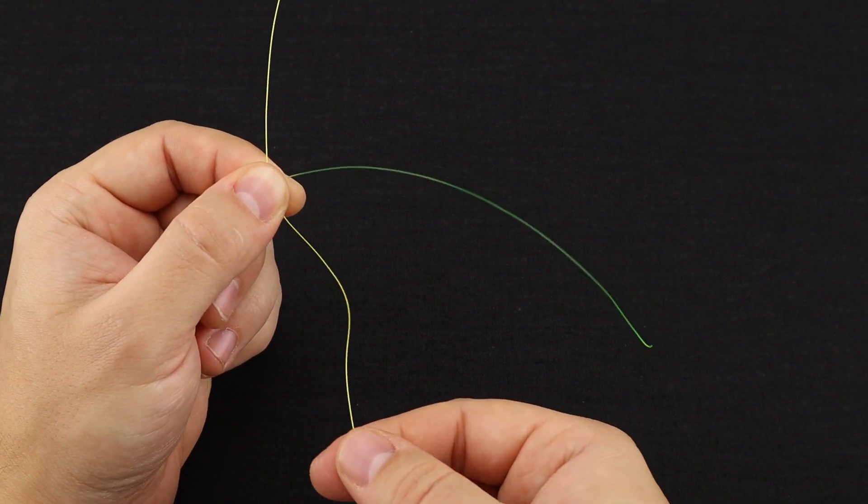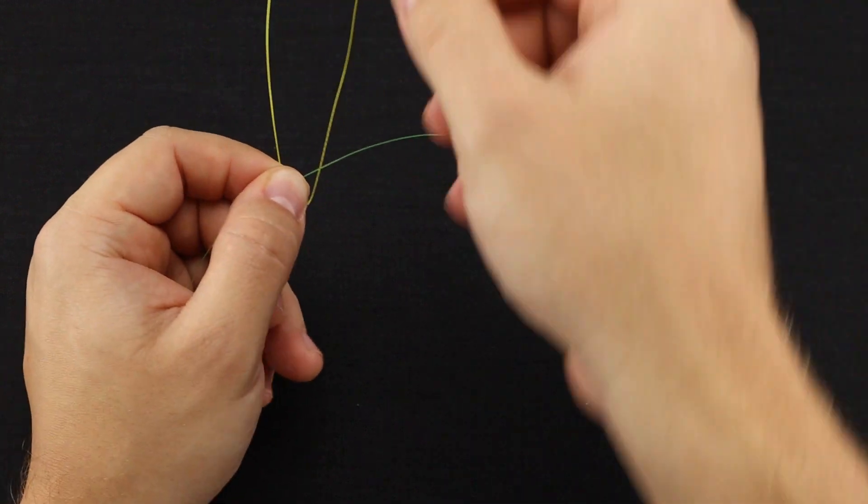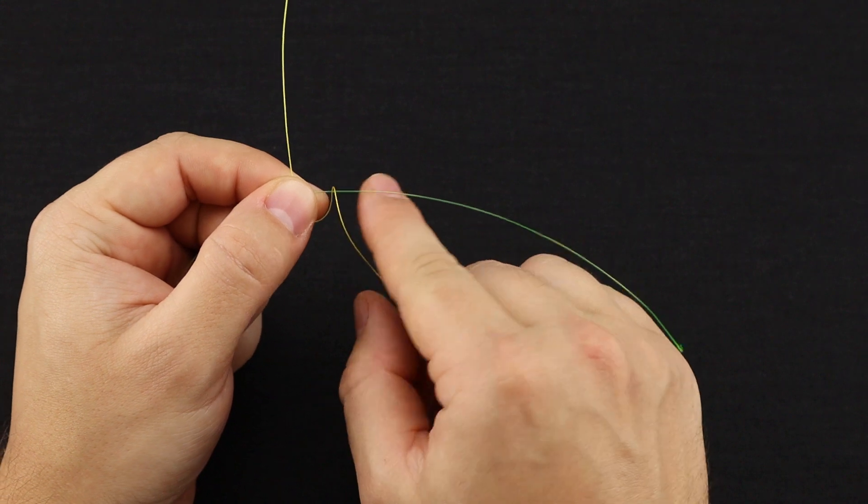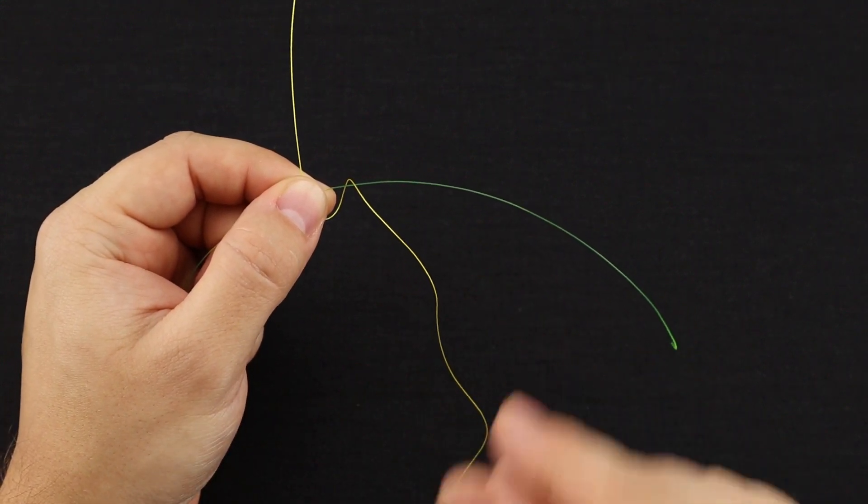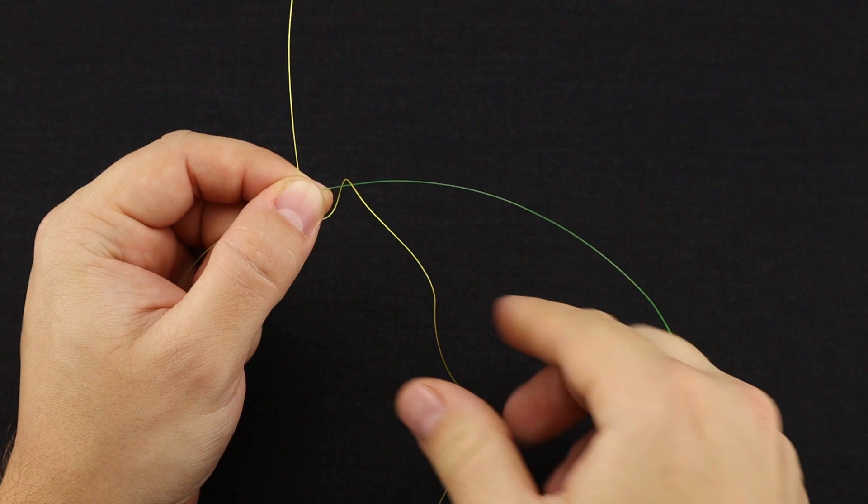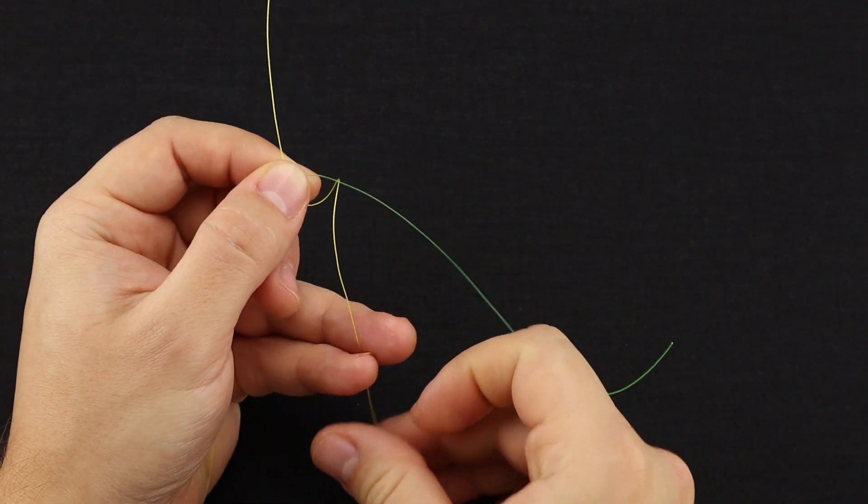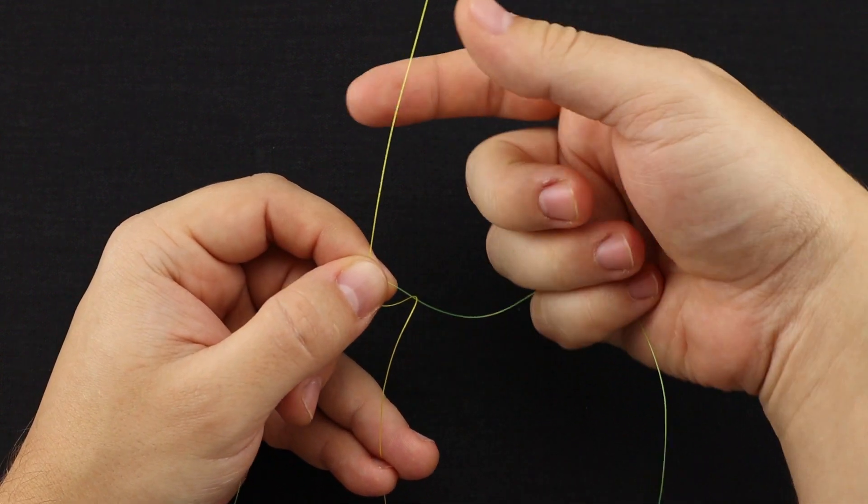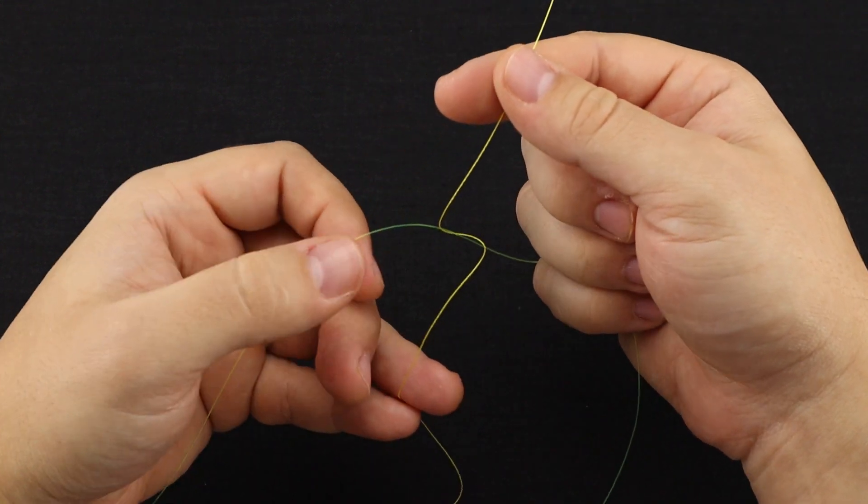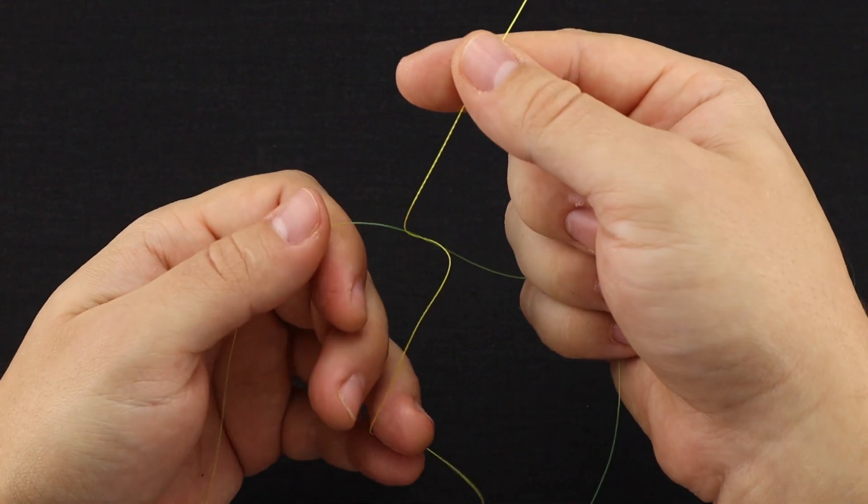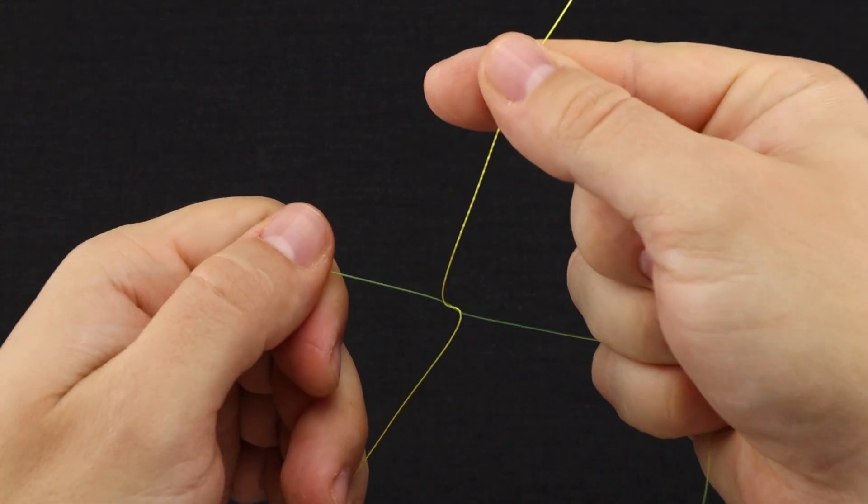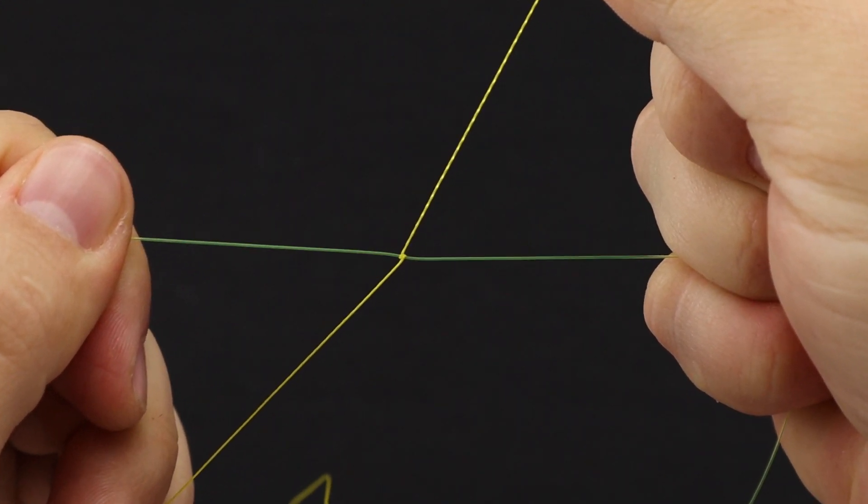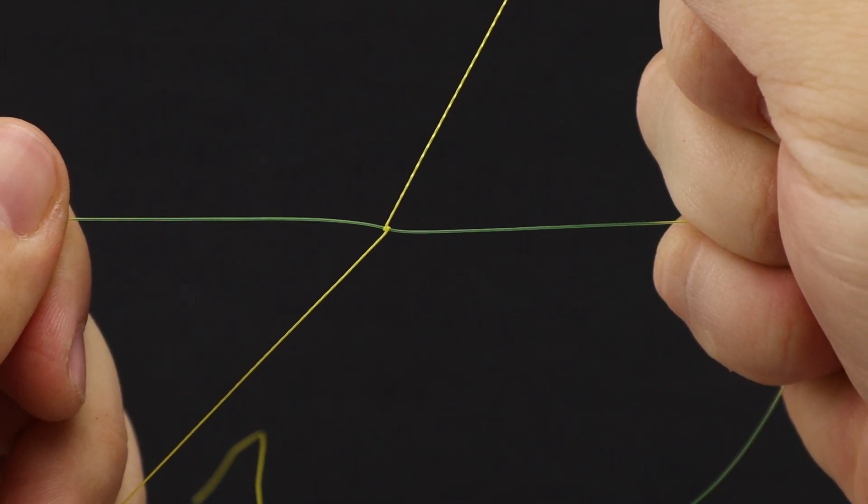Now the first step here is to run this braid under and over your monofilament tag. And some people like to just tuck this under their thumb and move on to the next step, but I like to do a different process to make sure the knot is forming correctly. So what I do is I actually grab it here with my left hand, then my right hand I grab the mono tag and the braid main, and in my left hand I have my mono main and my braid tag, and you pull on all four, and what happens is your braid will make a cross on your monofilament, just like so. And that's perfect.